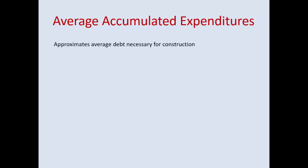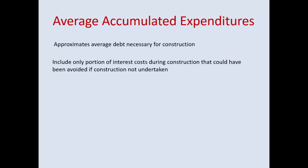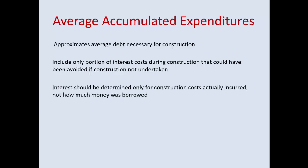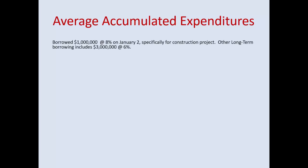To determine your weighted average, this approximates the average debt needed for construction. You include only the portion of interest cost during construction that could have been avoided if construction was not undertaken. Interest should be determined only for construction costs actually incurred — not how much was borrowed. That's a key point auditors will look for. You use the weighted average of your accumulated expenditures: how much did you actually spend?